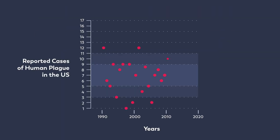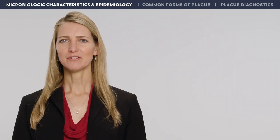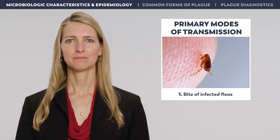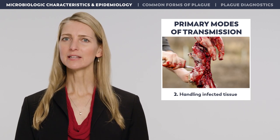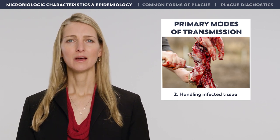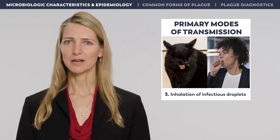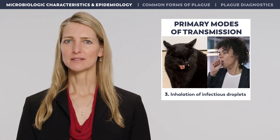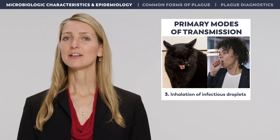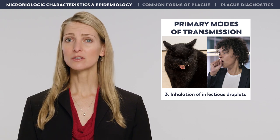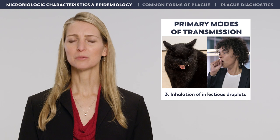In recent decades, there have been an average of seven human plague cases reported each year in the United States, with a range of one to 17 cases per year. There are three primary ways that people become infected with Y. pestis: the first is from the bite of an infected flea, which is the most common method. Second, people become infected by directly handling the tissues or carcasses of infected animals. Finally, Y. pestis can be transmitted through direct inhalation of infectious droplets, usually resulting in pneumonic plague. Aerosolizing procedures such as necropsy can also spread Y. pestis if adequate personal protective equipment is not worn.